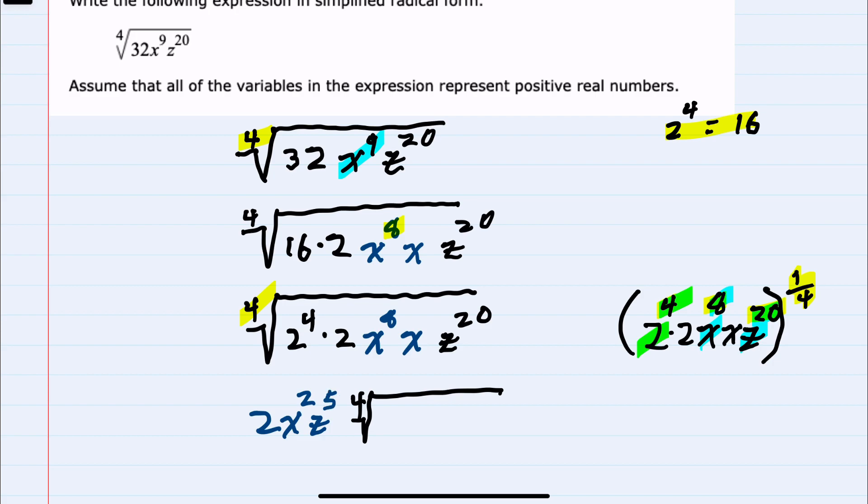Under the radical, I'm left with that other 2 and the x. Those will stay under the radical since I'm not able to bring them outside. This is our simplified expression.